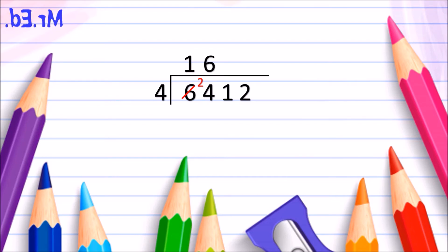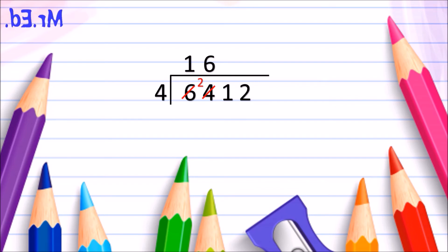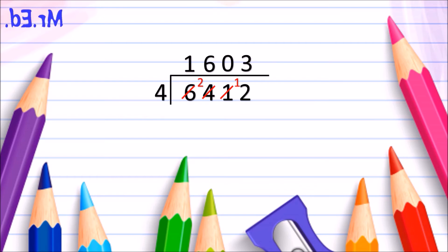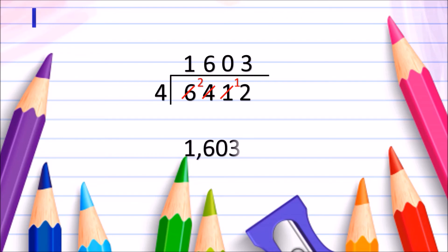We write 6 in our quotient area and cross out the 4, then move along. How many times does 4 go into 1? Well, 4 doesn't go into 1 because 4 is a larger number than 1. So we write a 0 in our quotient area, cross out the 1, and carry the 1 over to our next column. Now we find out how many times 4 goes into 12. Using our 4 times table: 4, 8, 12 — it goes in 3 times. So we now know that 6,412 divided by 4 is 1,603.